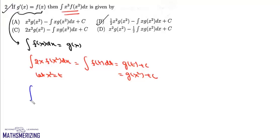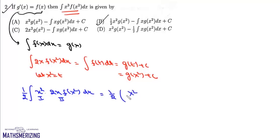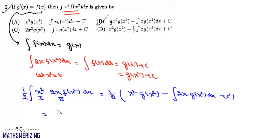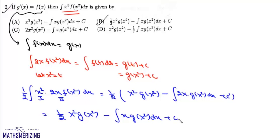We write the integral as 1 by 2 times X squared into 2X F of X squared dx, and solve by parts. The first function is X squared and the second is 2X F of X squared. This gives 1 by 2 times X squared times G of X squared, minus the integral of derivative of X squared which is 2X times G of X squared dx. After simplification, the answer is 1 by 2 X squared G of X squared minus the integral of X G of X squared dx plus C, and that's option B.